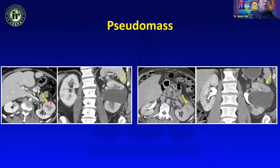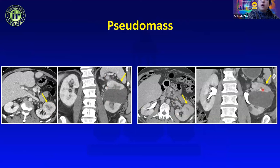3D images also help distinguish real masses from pseudomasses. This patient was referred for renal mass biopsy — on the axials it looks like a heterogeneously enhancing mass, but on the coronal you get the impression the central hypodense area is unopacified renal calyces, distorted by a large renal cyst. Instead of biopsy, I recommended delayed phase imaging, which confirmed contrast opacification of the calyces — this was normal renal parenchyma, not a renal mass.